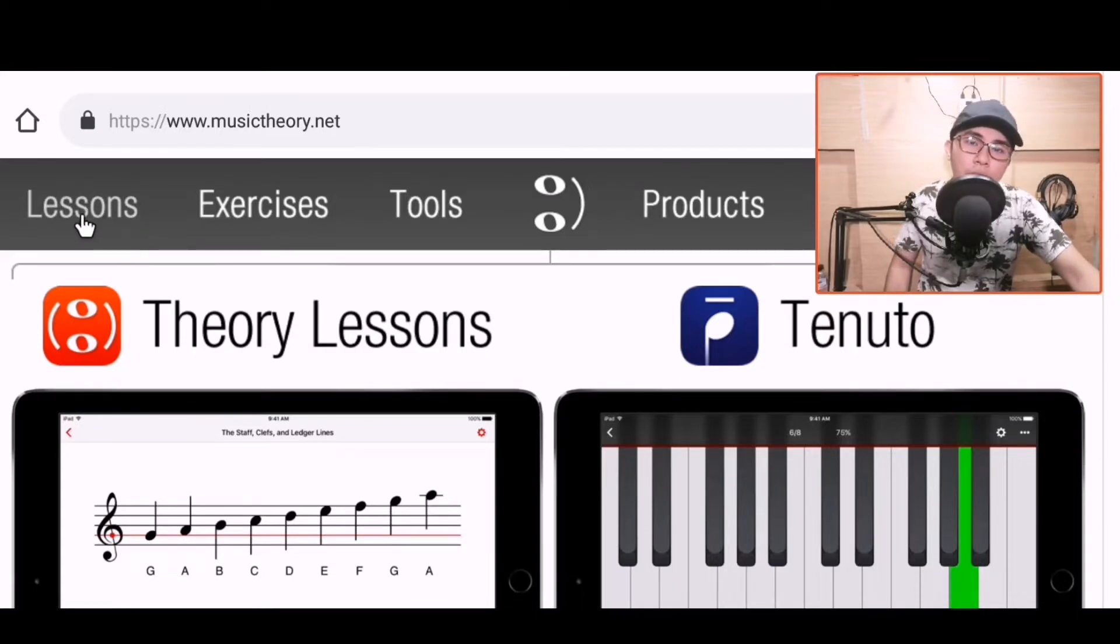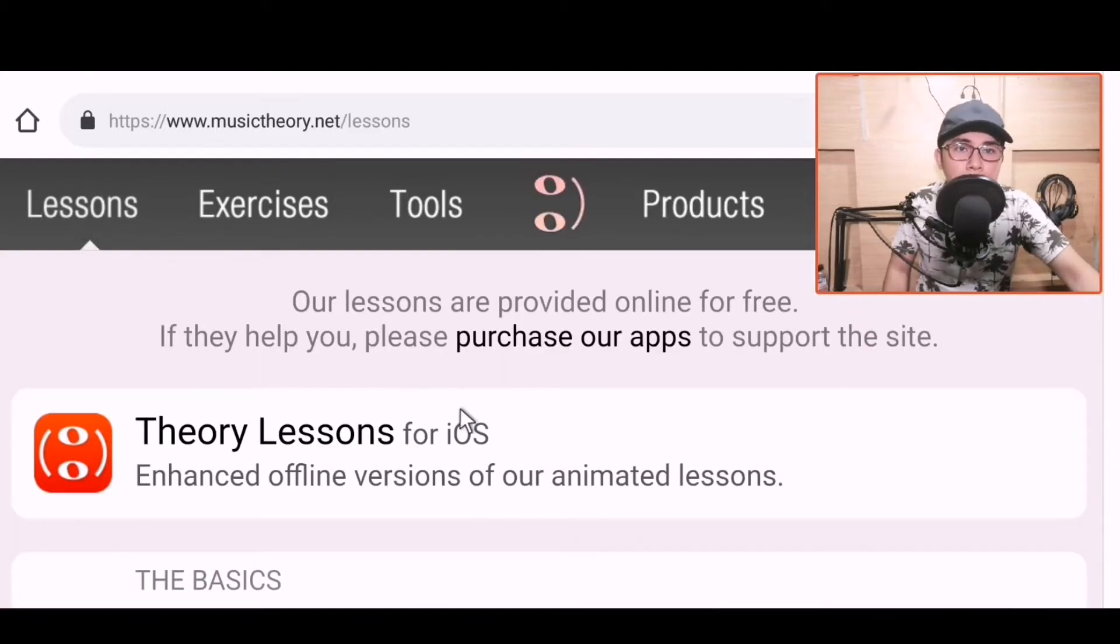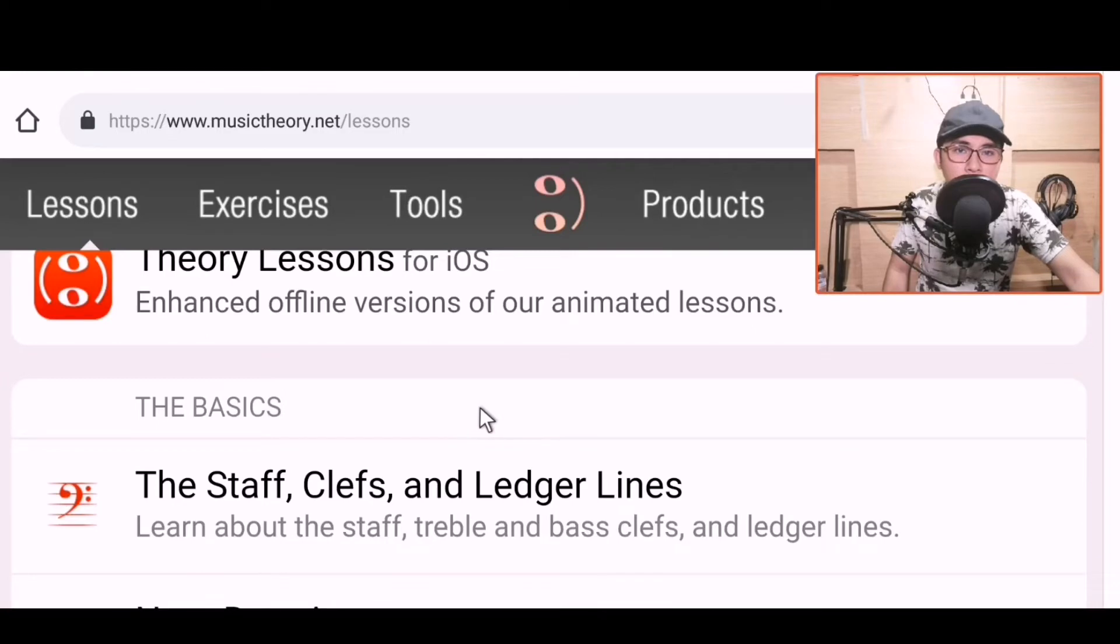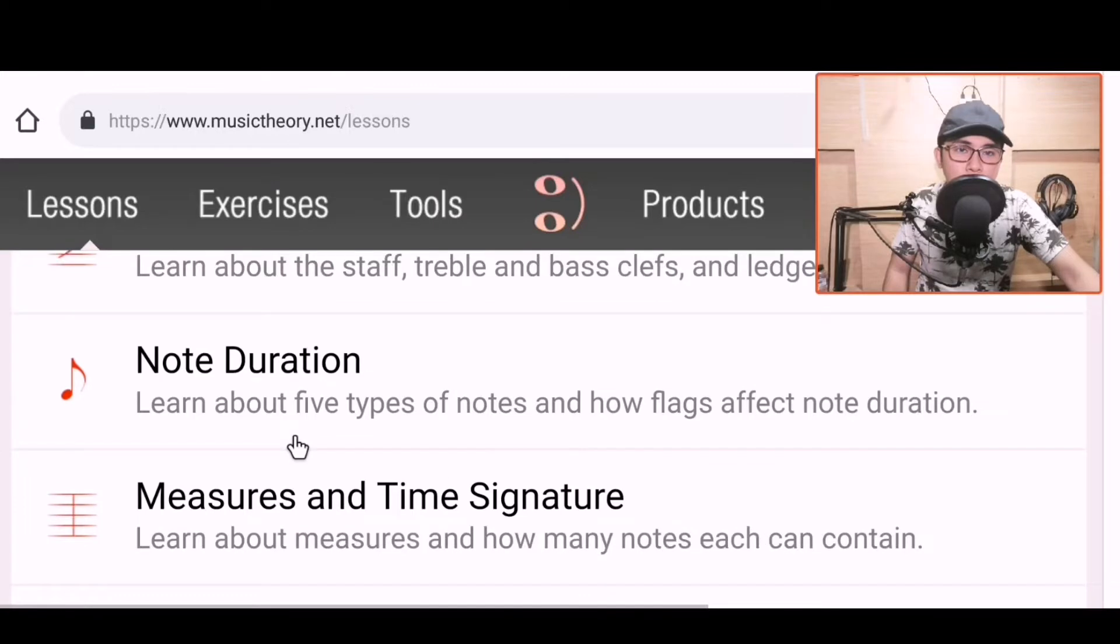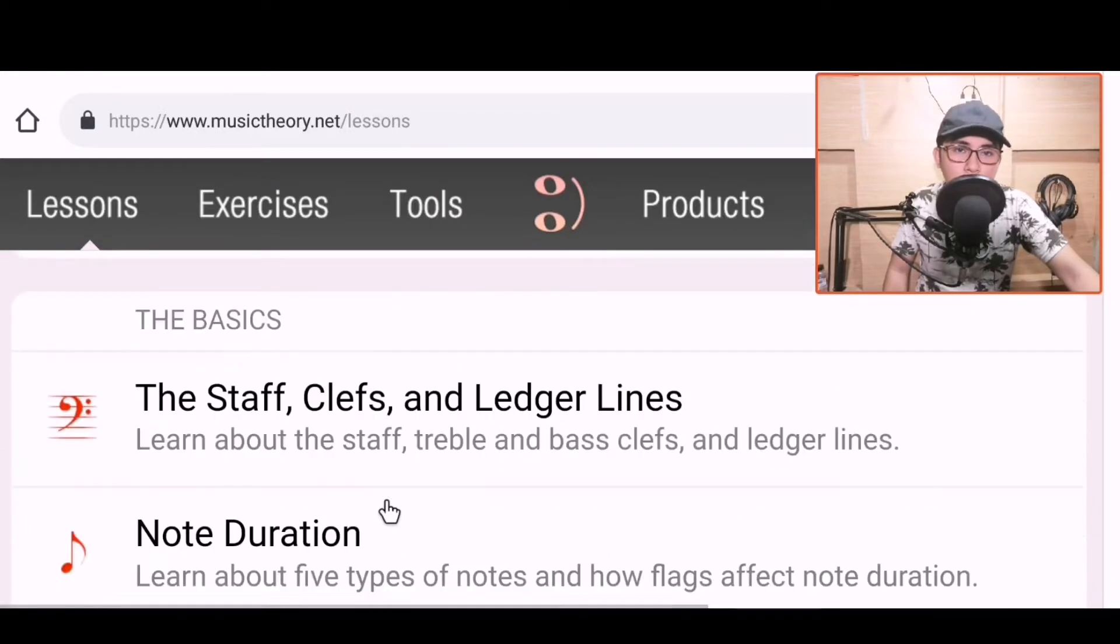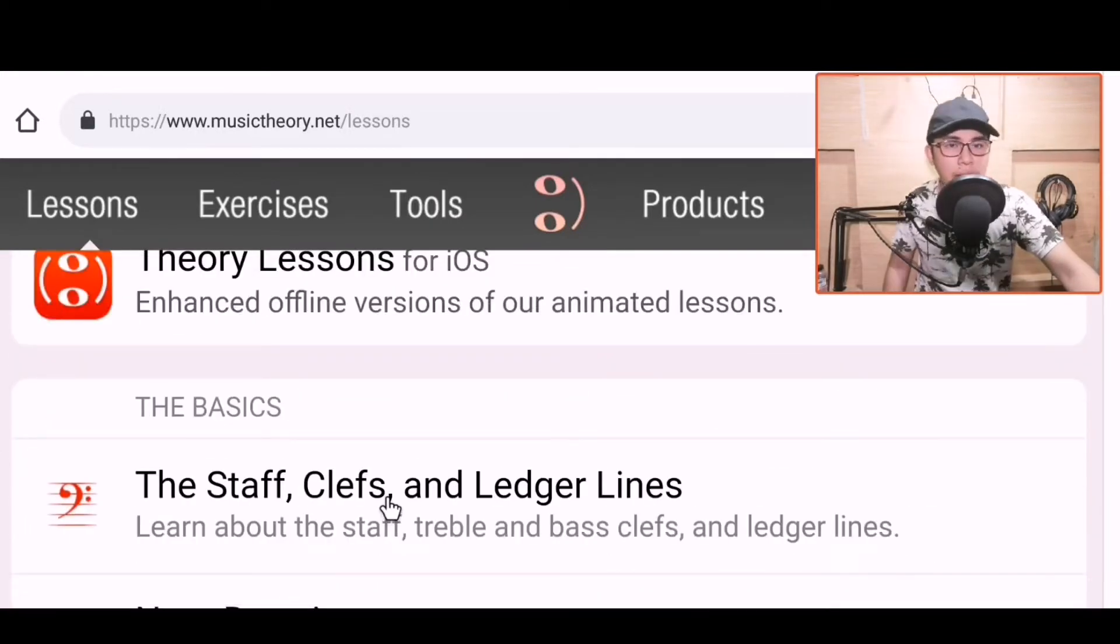So where do we start? Let's click here on the lesson. This is our basic. So here's what's listed: the basics, the staff clefs and ledger lines, note duration, measures, and time signature. Let's go to staff clefs and ledger lines first. This is the most basic thing we'll learn about how to read music sheets. Alright, so let's click.